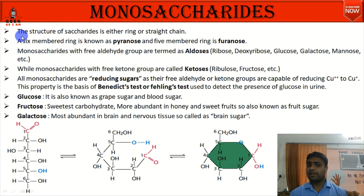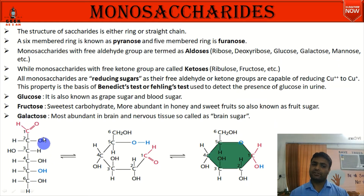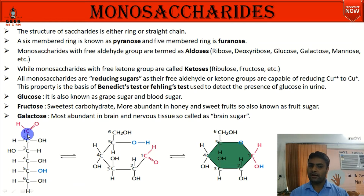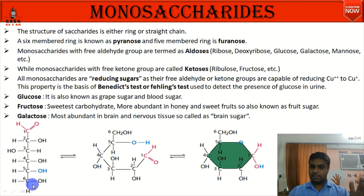The structure of a saccharide can be either in ring form or straight chain form. In the chain form, the first carbon has an aldehyde group, followed by second, third, fourth, fifth, and sixth carbons. This chain can convert into a ring structure.